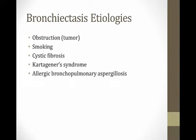Why do people get these dilated airways in bronchiectasis? One reason is obstruction from a tumor — when you have a tumor, you can't clear mucus appropriately, it backs up behind the tumor, setting you up for recurrent infections and bronchiectasis. Another etiology is smoking, which is associated with bronchiectasis either directly or through recurrent infections. Kids with cystic fibrosis get recurrent lung infections and can develop bronchiectasis. Two rare causes especially important for Step 1 are Kartagener syndrome and allergic bronchopulmonary aspergillosis.